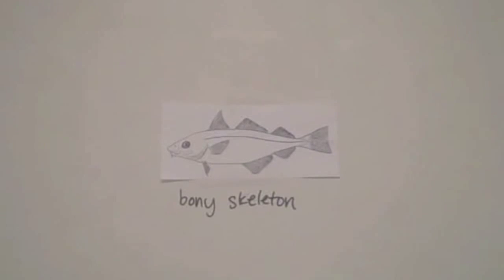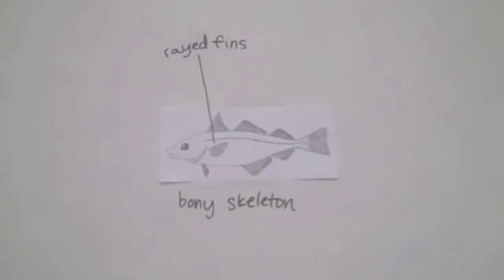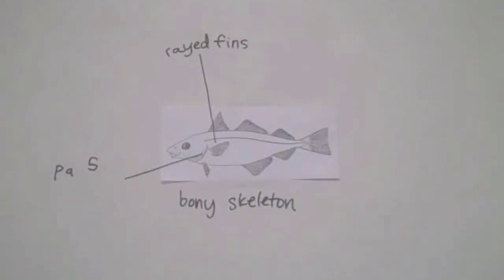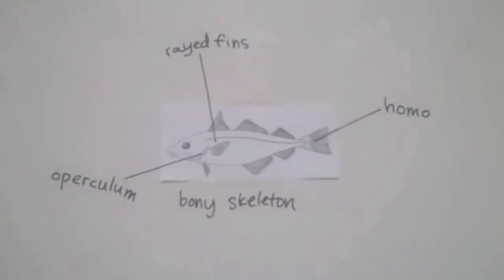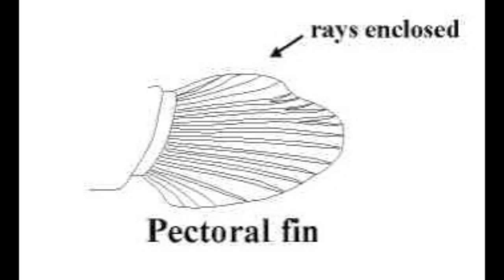Ray-finned fish have several defining characteristics. They have rigid skeletons made of bone. They also have fins that are fully arrayed with bony segmented rays that extend from the base of the fin. They have five pairs of gills that are covered by an operculum, which is a bony flap that protects the gills. They have a caudal fin that is homocercal, meaning it has upper and lower lobes that are the same size. Since the rayed fins are the most distinguishing feature of ray-finned fish, let's take a look at the mechanical properties of rayed fins.